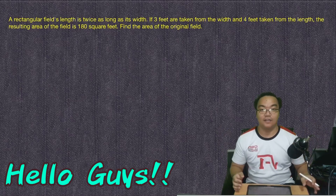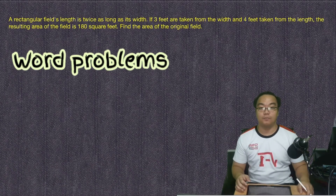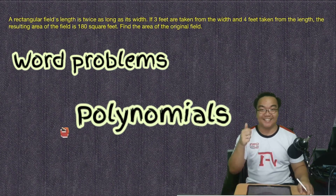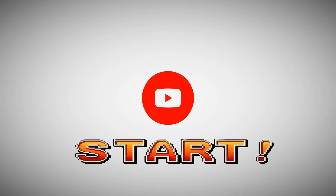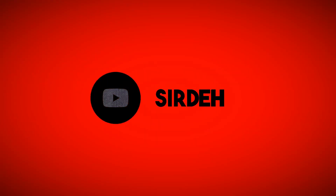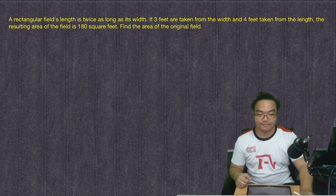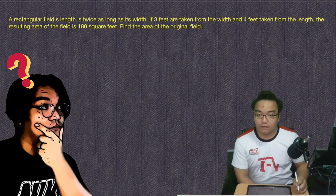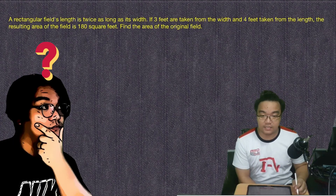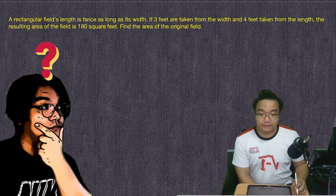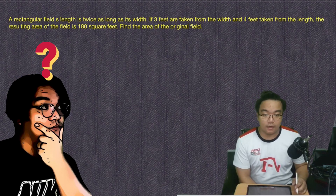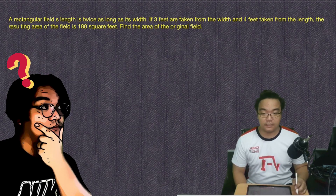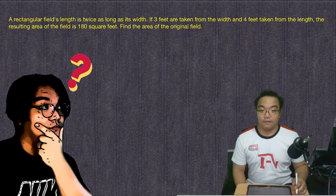Hello guys, for this video we are going to solve word problems involving polynomial functions and equations. First problem: a rectangular field's length is twice as long as its width. If 3 feet are taken from the width and 4 feet taken from the length, the resulting area of the field is 180 square feet.